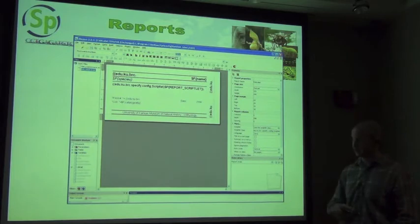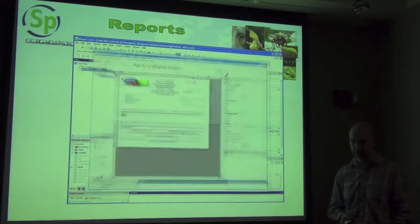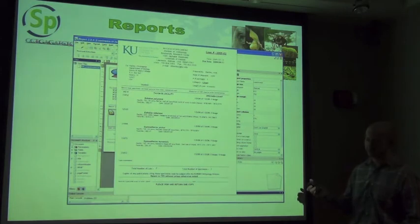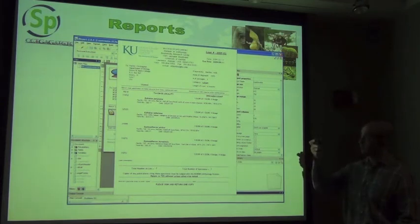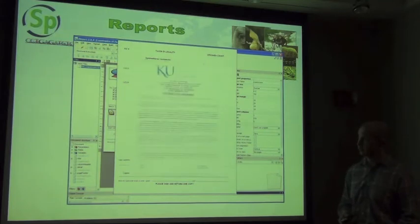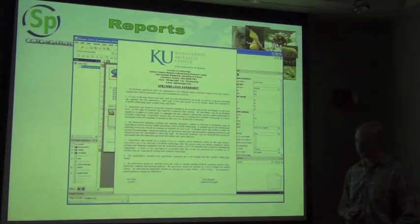iReports supports barcodes, images, and shapefiles, so you can create very complex labels or loan forms depending on what you want for your collection. This is what a loan form looks like — you can create very complex loan forms that have images associated with them. They can be multi-page reports where the first page has all the loan agreement information, the second page continues with specimens, and then a specimen loan agreement at the end prints out with all the material being sent out on loan.